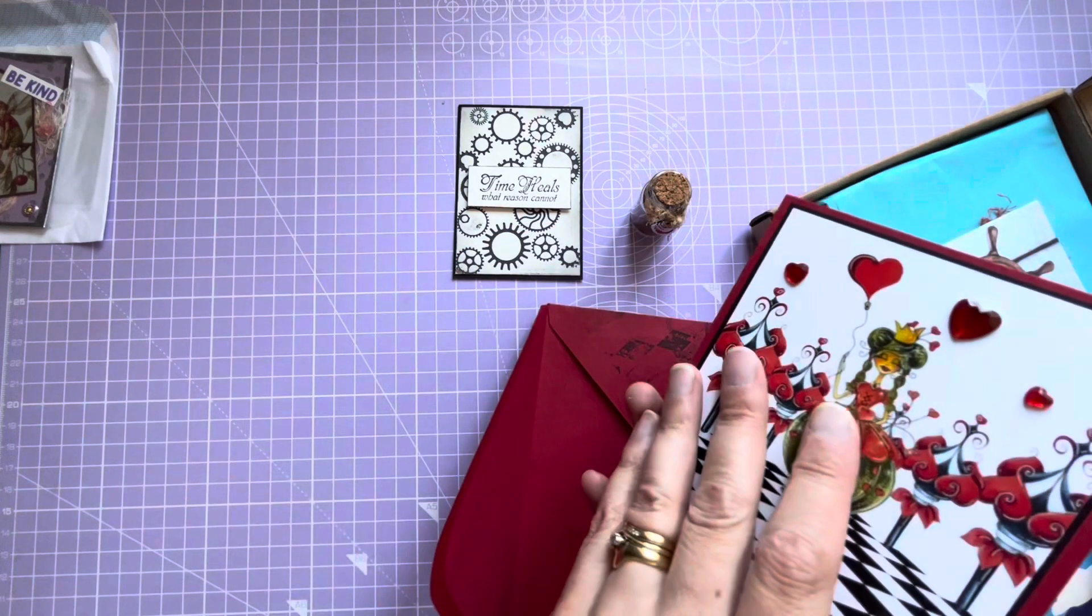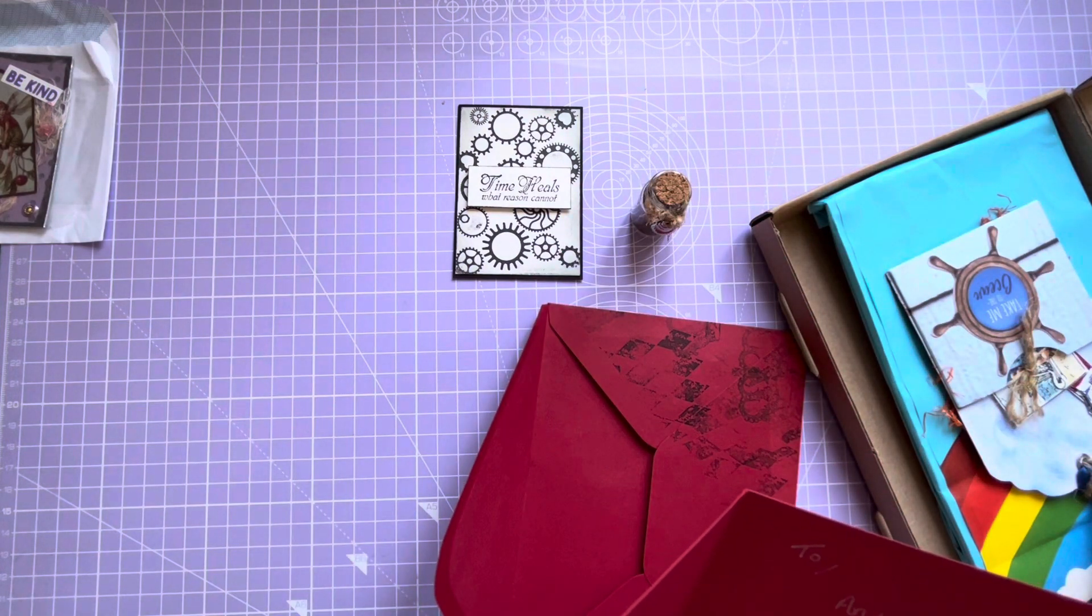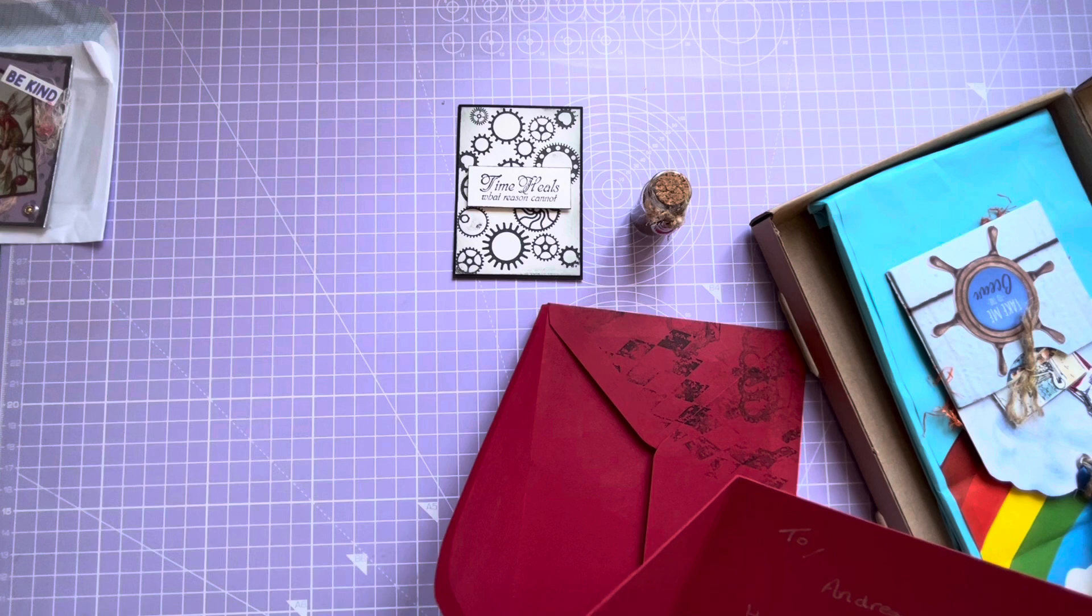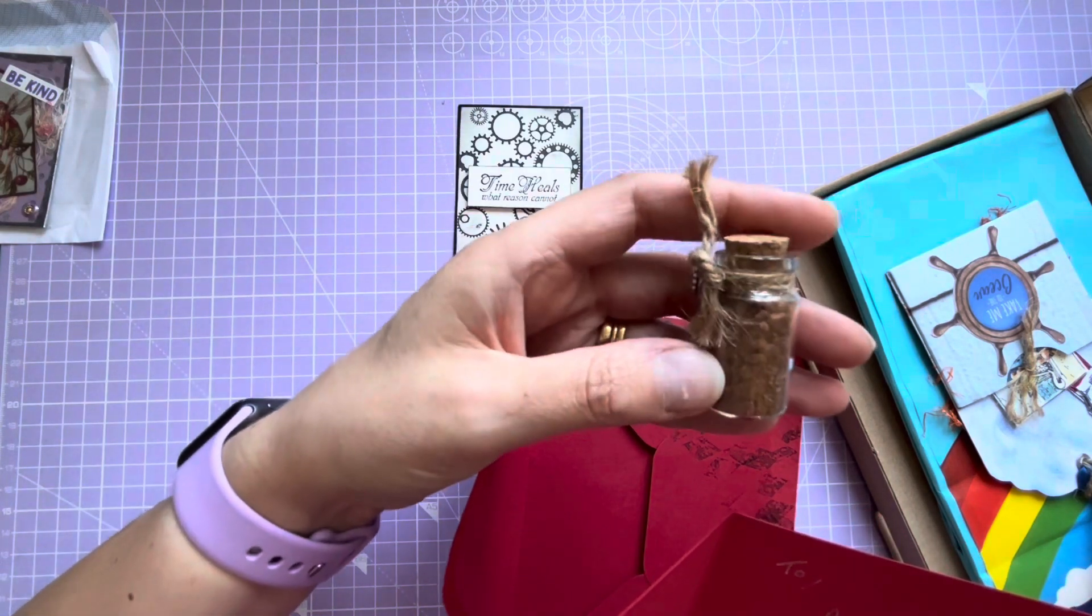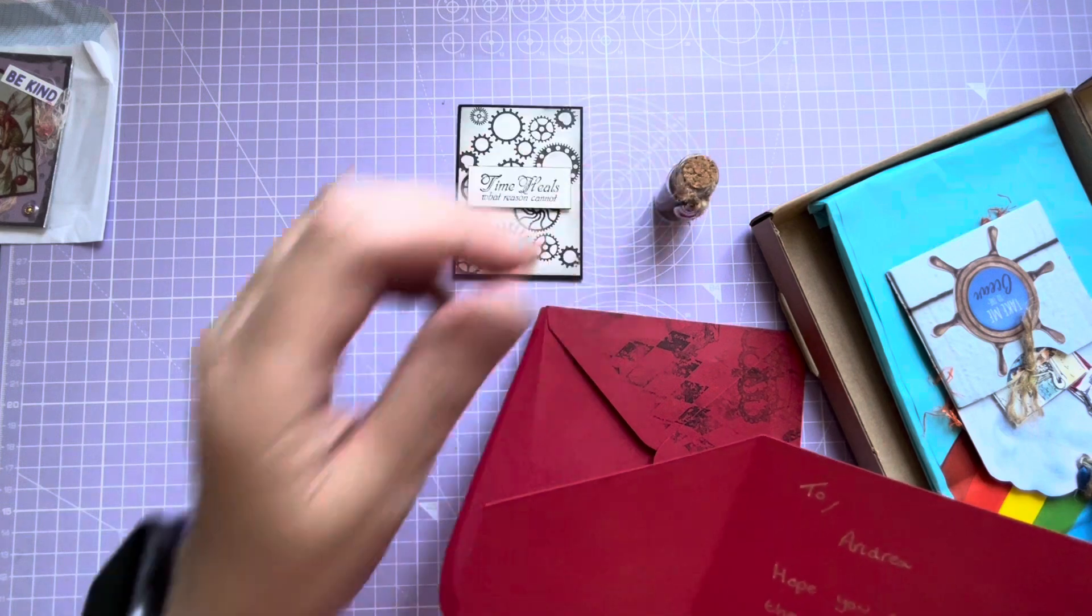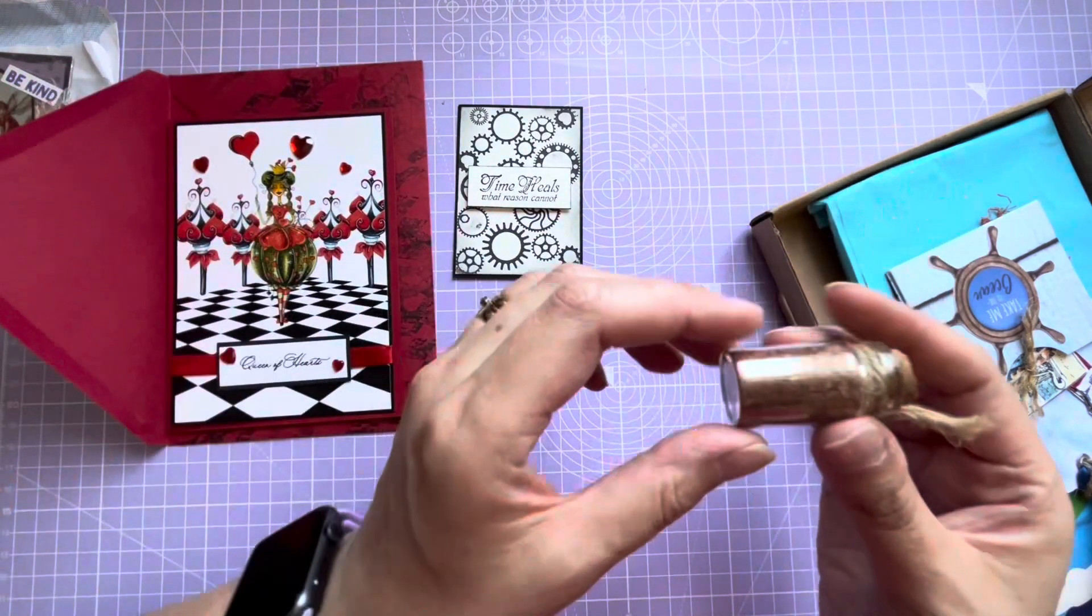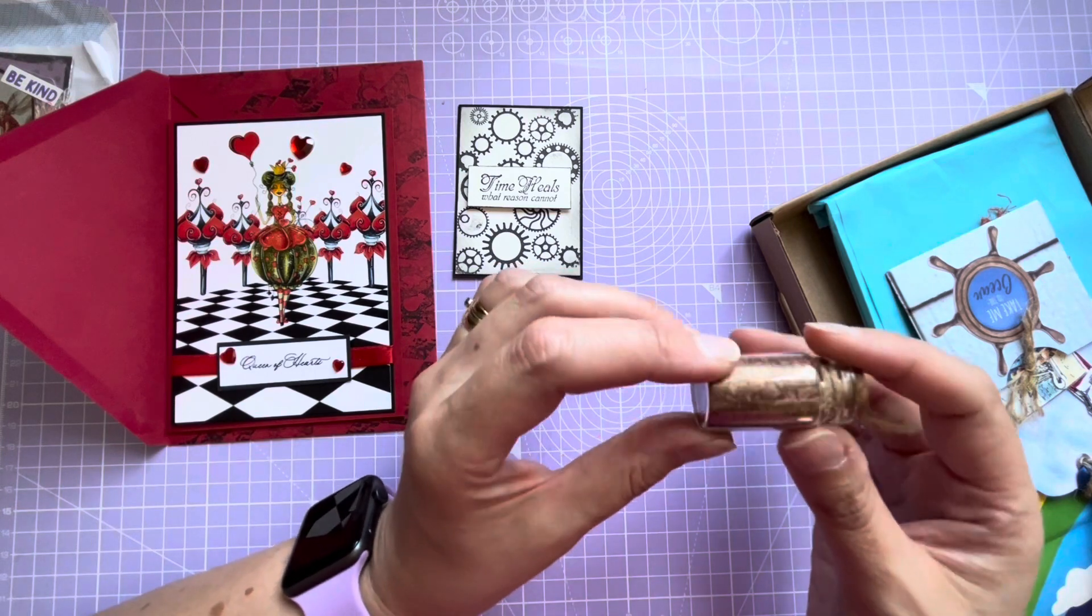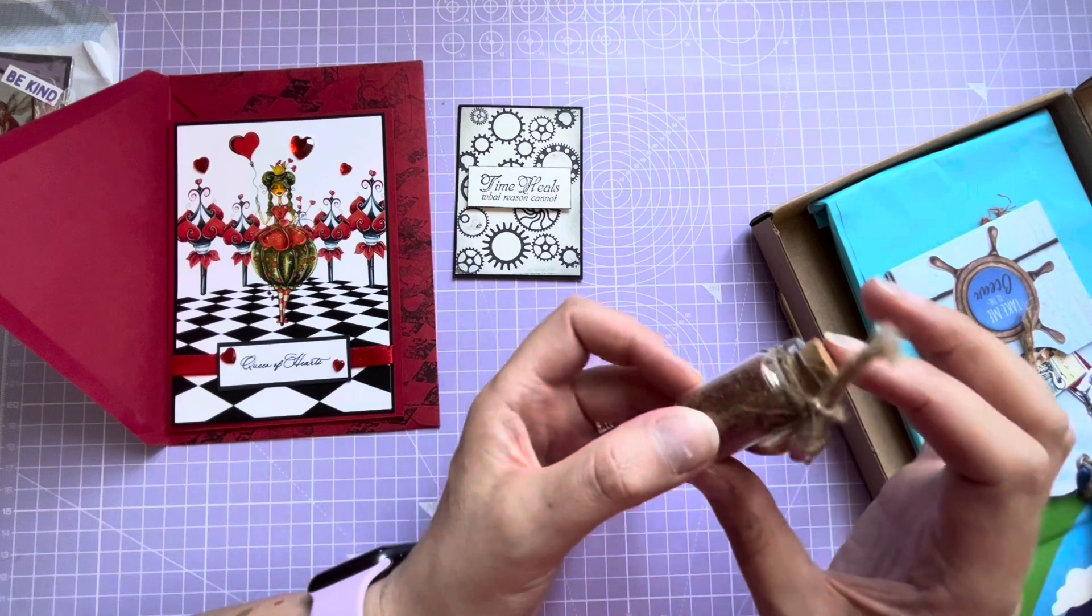And it says Queen of Hearts on the card - stunning card, lovely red base. And it says 'To Andrea, hope you can use these stamps in your crafting. The little bottle contains faux sand we made using grit and mica powder. Happy crafting, Ashley and Maureen, The Crafty C's.' Thank you so much! So this has got mica powder and grit in it - it's a lovely copper coppery color.